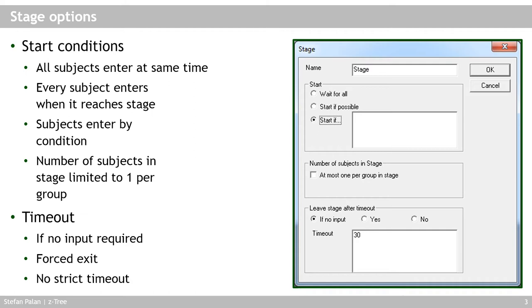'Start if possible' is the opposite: whenever a subject reaches a stage that has this setting enabled, they will immediately be put into the stage. The 'start if condition' field allows you to enter a condition that must be fulfilled for subjects to be allowed to enter this stage.